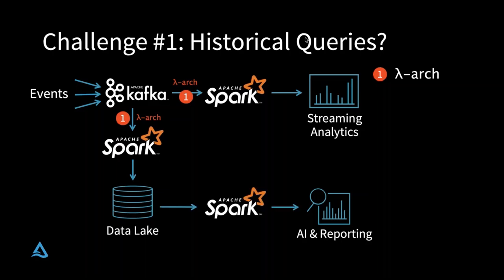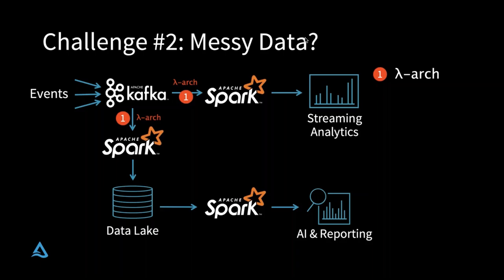That brings us to challenge number two: data in the real world is often messy. Some team upstream from you changes the schema without telling you, and now you have problems. A pattern I see is you need to add validations — write extra Spark SQL programs to check that your assumptions about the data are correct, and if they're wrong, send an alert. Because we've done the Lambda architecture, we have to do validations in two different places. Now we set up validation to handle the messy data.